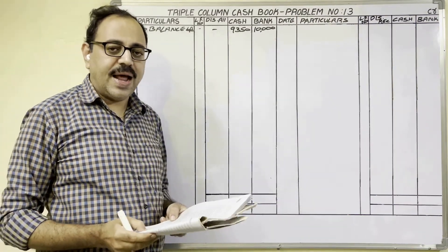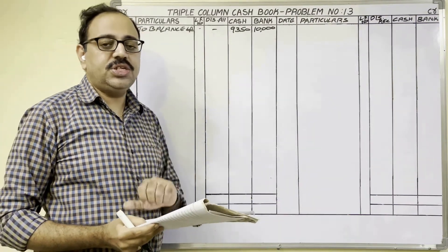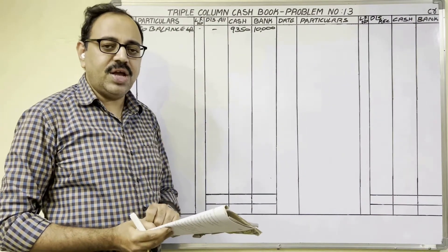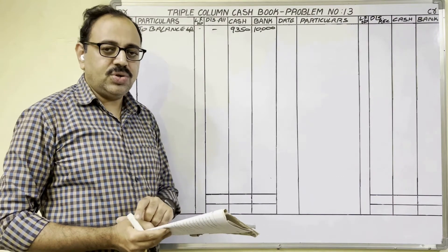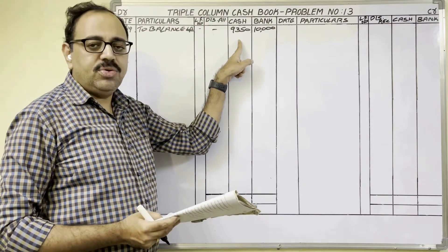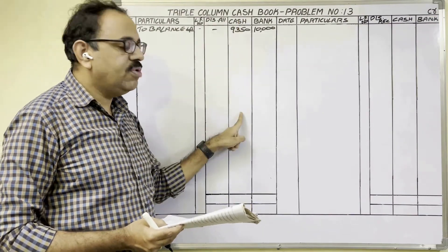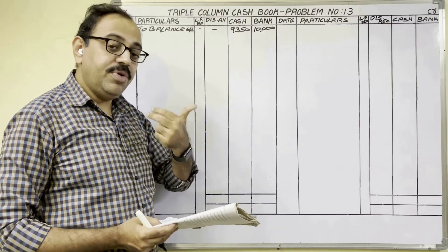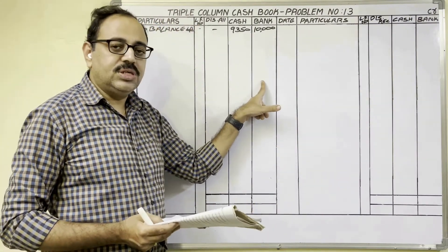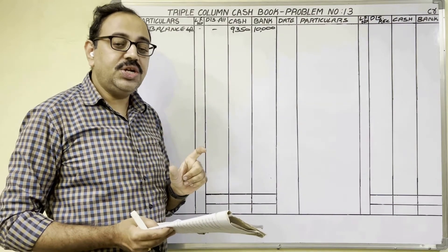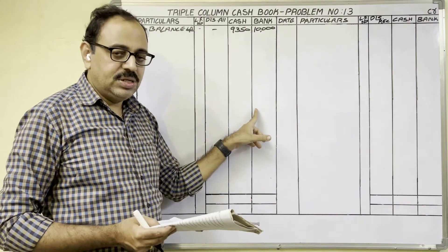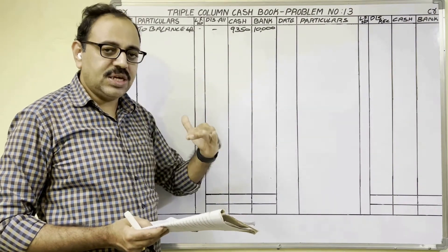For each transaction we should think about journal entries and post them on the proper side. I use the hints method: if cash is coming into the firm, write on the debit side cash column; if cash is going from the firm, write on the credit side cash column. If the bank balance is increasing, write on the debit side bank column; if the bank balance is decreasing, write on the credit side bank column.